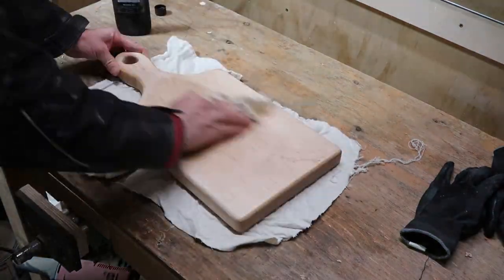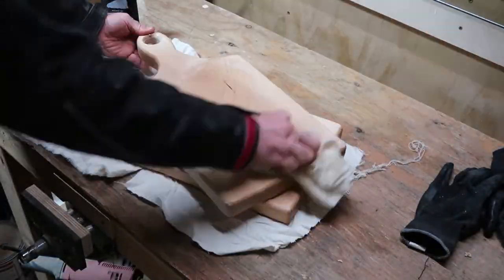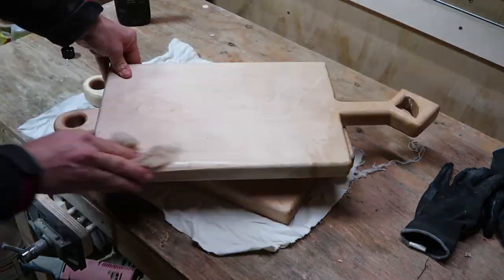The final step was to apply a coat of cutting board finish. I used walrus oil, which is a mixture of food safe oils and beeswax.